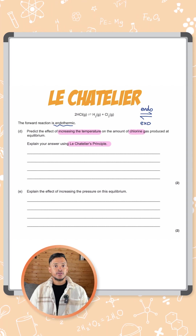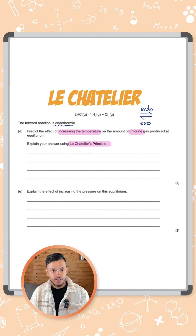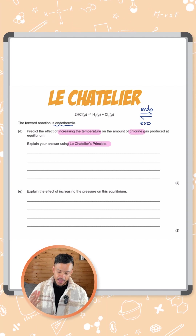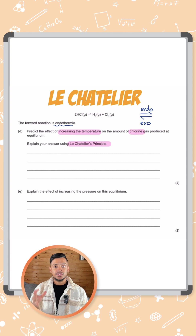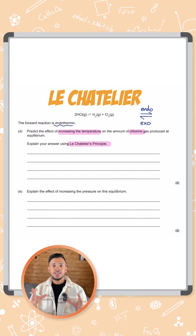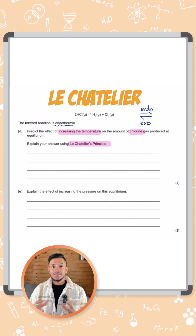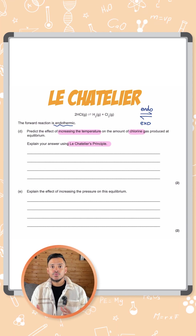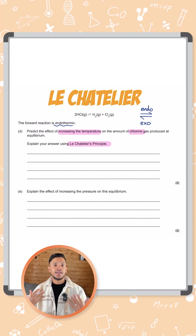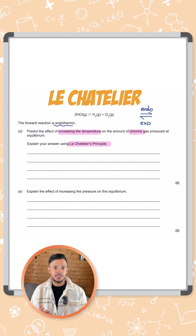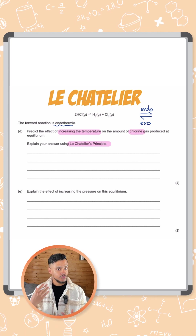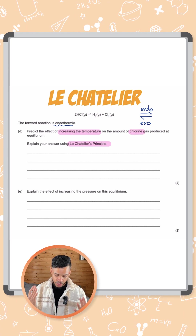Let's remind ourselves of Le Chatelier's principle. If a change is made on a system at equilibrium, the system will try to counteract the change — in other words, it will try to do the opposite.